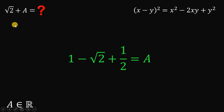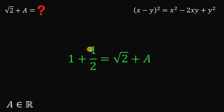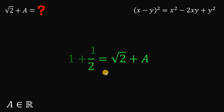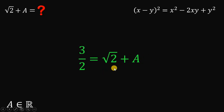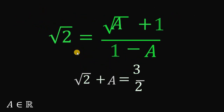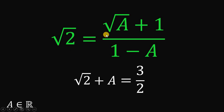We want the value of square root of 2 plus a, so we add square root of 2 to both sides. The square root of 2 on the left-hand side cancels out, giving us 1 plus 1 half equals square root of 2 plus a. And 1 plus 1 over 2 is just 3 over 2. Therefore, given that square root of 2 equals square root of a plus 1 over 1 minus a, the value of square root of 2 plus a is 3 over 2.